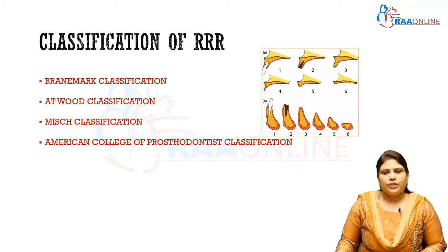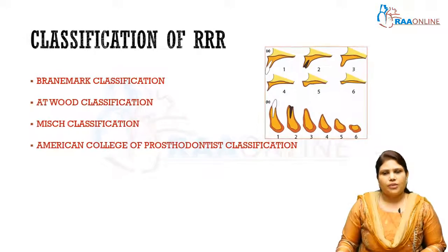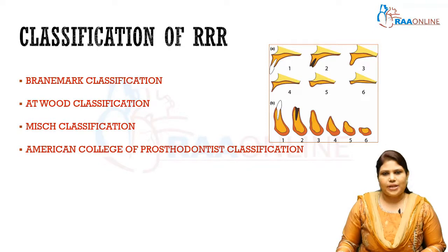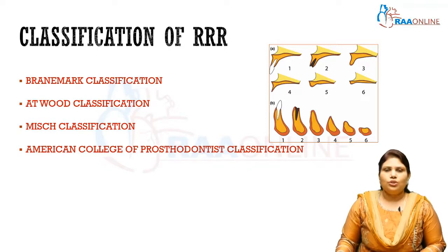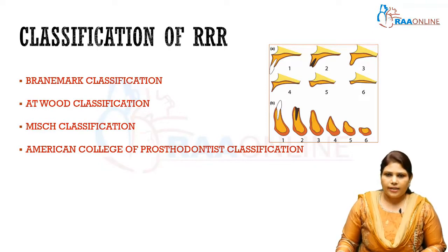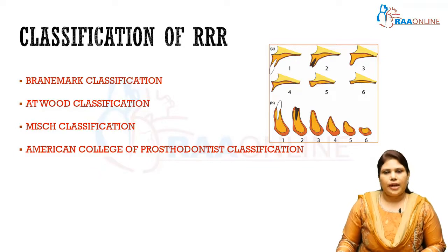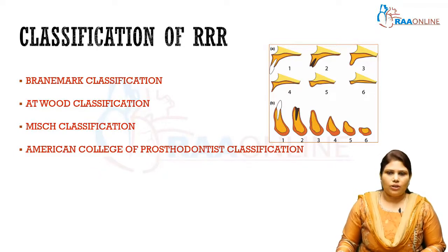Regarding classification, various kinds of classification for residual alveolar ridge resorption exist. Some of the standard classifications are the Brainmark classification, Atwood classification, Misch classification, and the American College of Prosthodontists classification.